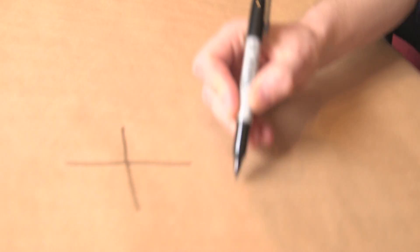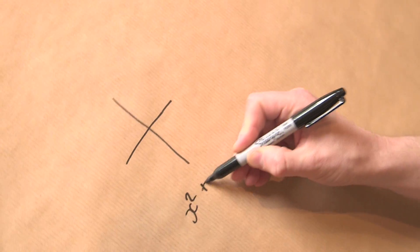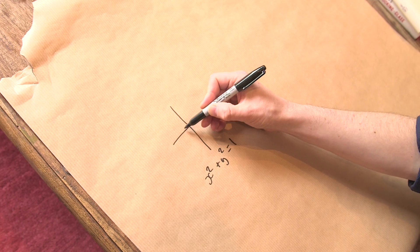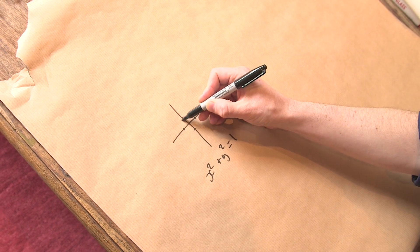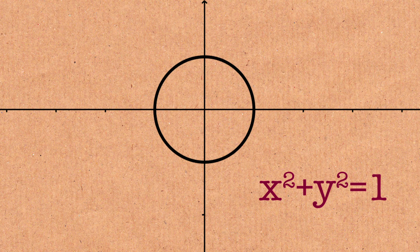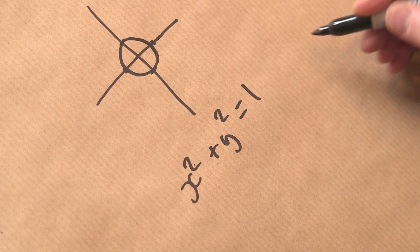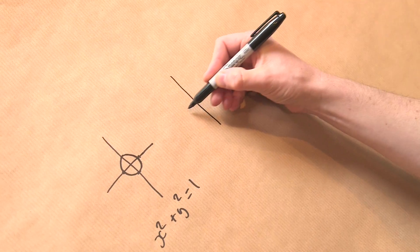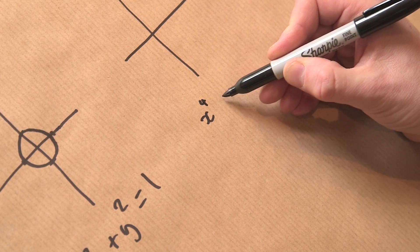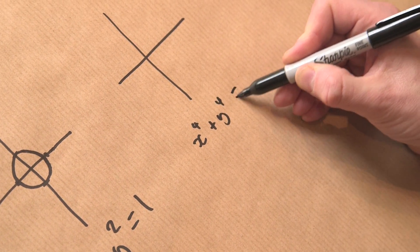I'm going to just start with the equation for a circle. x squared plus y squared equals one. If this is one, this is a circle. Let's play around with this, but let's enlarge the exponent. So let's go to x to the four plus y to the four equals one.